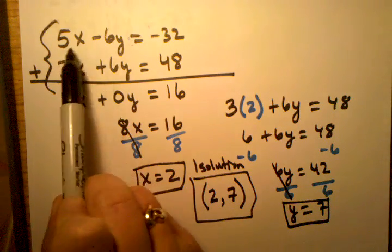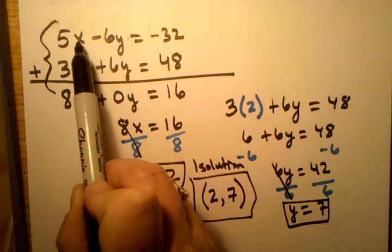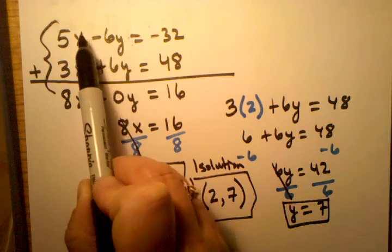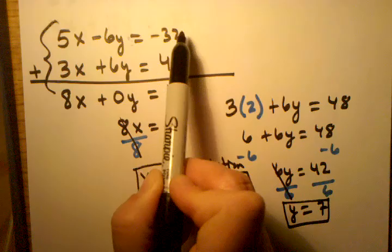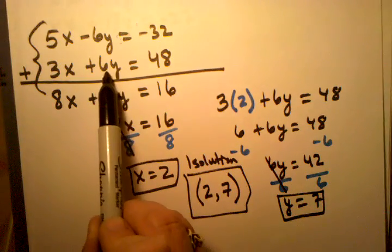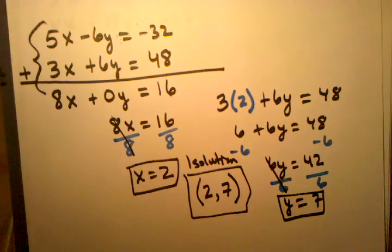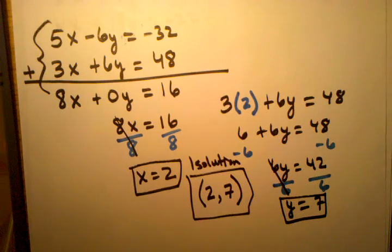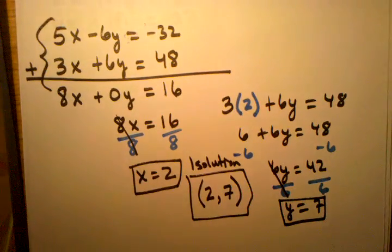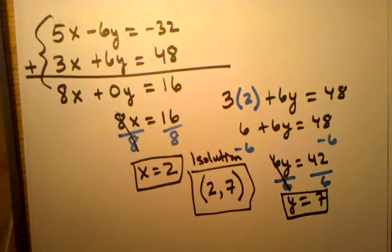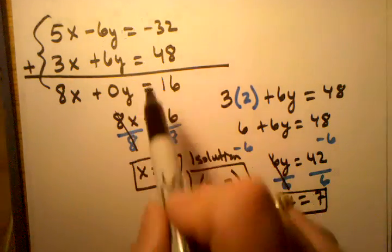So in other words, after I do the number crunching, after plugging in 2 and 7 for x and y in this equation for 5x minus 6y, what I will end up with is negative 32 equals negative 32. And in here, when I plug in the numbers for x and y here, I'll end up with 48 equals 48. And both of those are true statements. So therefore, I will have proven to myself that this is truly a point of solution, because these numbers work for the coordinates of x and y on both lines.